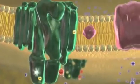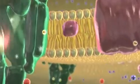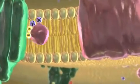The energized electrons flow down the electron transport chain, releasing energy that is used to pump hydrogen ions, the blue balls, into the thylakoid.